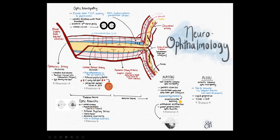When we think about optic neuritis, it usually involves the posterior portion of the optic nerve. That's why the patient can't see, but when you look in the eye you don't see anything abnormal. The problem is back there in the posterior nerve.